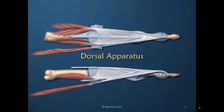The dorsal apparatus — an absolutely exquisite example of human anatomy. Although when one looks at it in reality it looks fairly simple, as if it's one sheet of tendinous material, it is indeed one of the most complex structures in the human body.